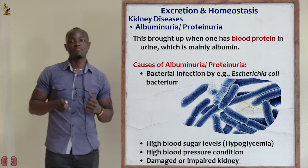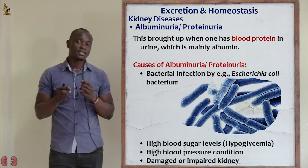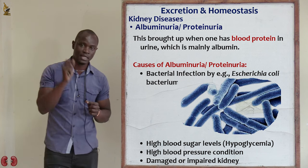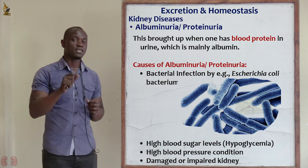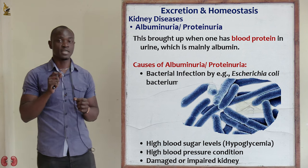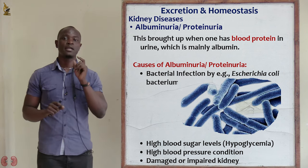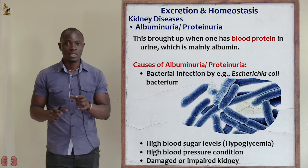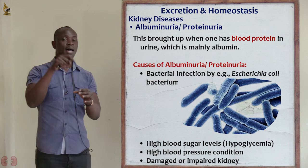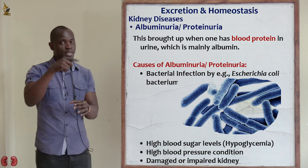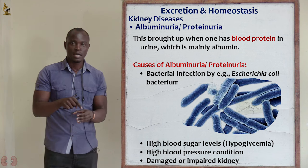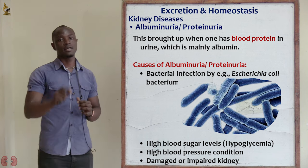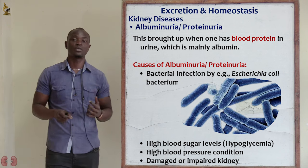So when albumin is present in urine, it means that obviously there's some disorder in the nephrons, there's some disorder in the kidney, there's some disorder in the ultrafiltration process. Because remember, in the glomerulus, no protein is allowed to pass. But now in this disorder, there's some albumin — albumin is protein — so it points towards some problem with the Bowman's capsule and the glomerulus to function appropriately.